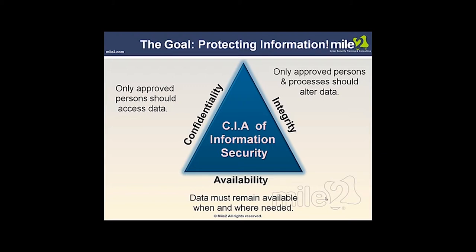Availability — we want our information to always be there, remaining available when and where we need it. We would not tolerate, for example, if we're working with online banking and they said they're only available some of the time. If we're going to put our money in the bank and expect to purchase items any time of the night or day, use our debit card tied to our banking, we would not tolerate being unavailable from 12 to 6 a.m. We want constant availability and we don't want hackers to affect that. Confidentiality, Integrity, and Availability are highly critical.